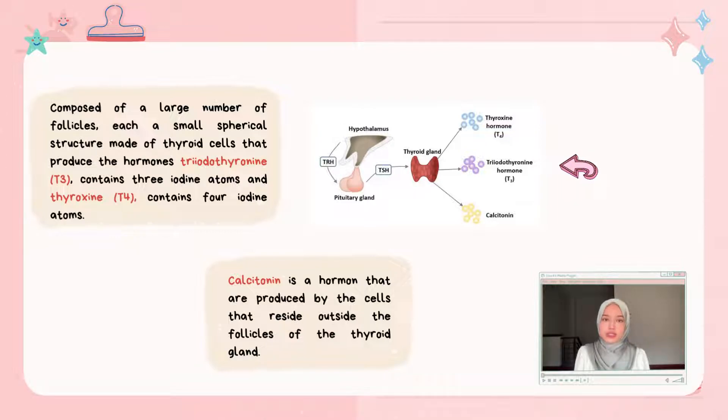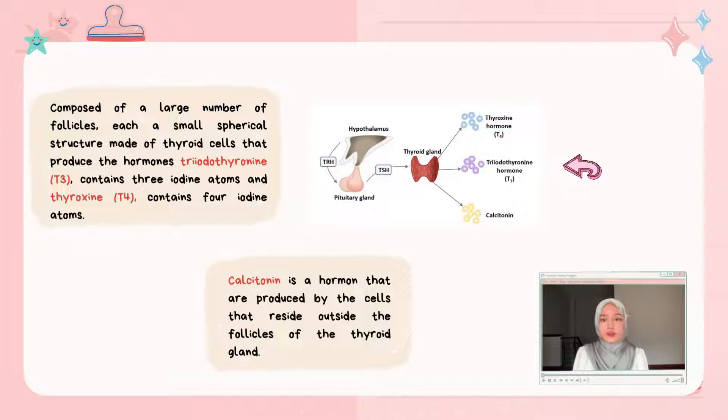Calcitonin is a hormone produced by cells that reside outside the follicles of the thyroid gland.